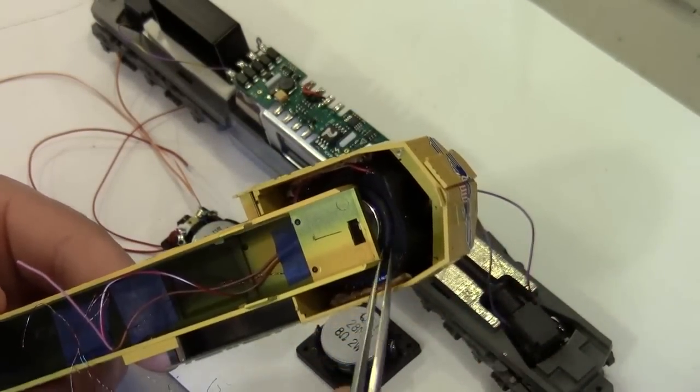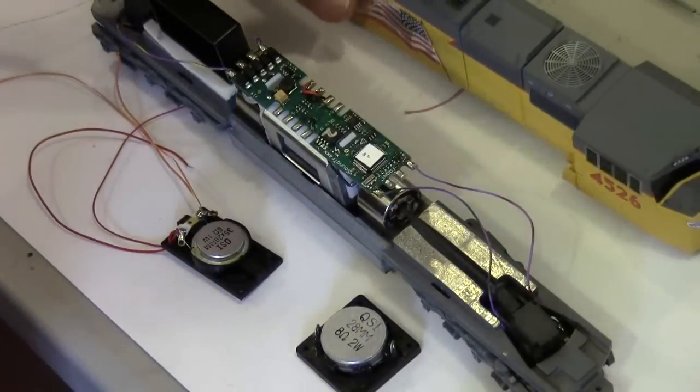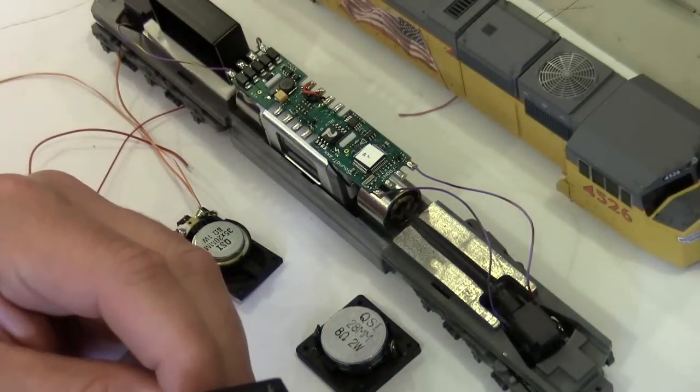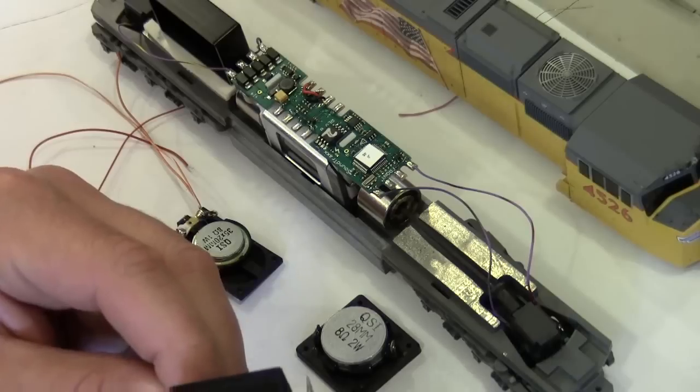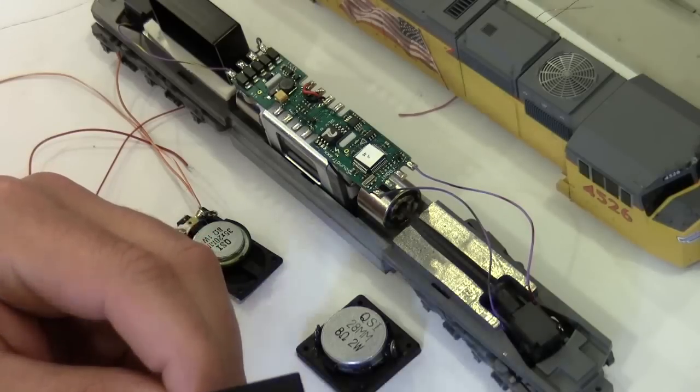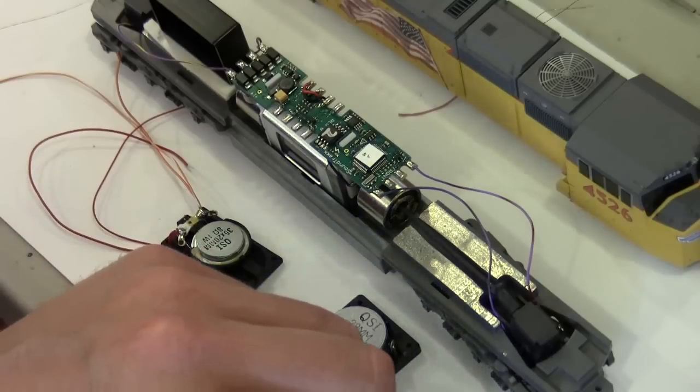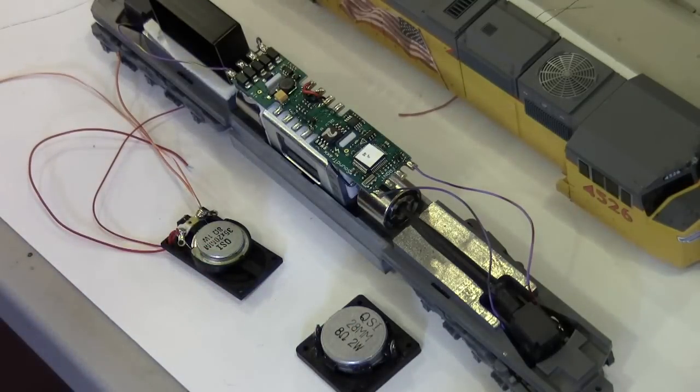Now that fit is accommodated by sanding the corners of the enclosure so it has a nice snug fit up inside the cab. I also disassemble the locomotive and the cab in particular to accommodate that speaker.